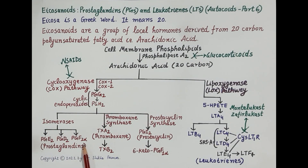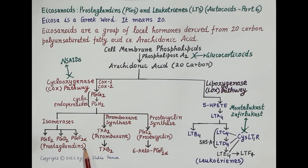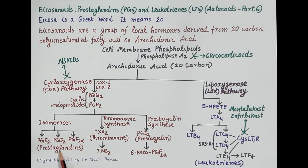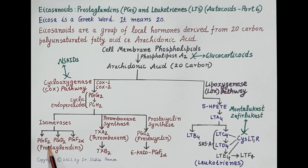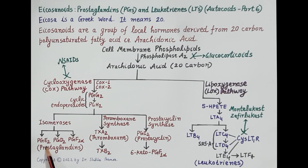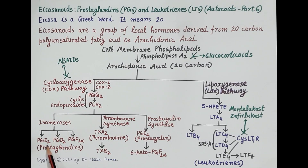PGE2 and PGF2α are the primary prostaglandins, primarily synthesized in the lungs and spleen. PGE2 is a mediator of pain and inflammatory response, is pyrogenic (produces fever), decreases gastric acid production, and increases mucus production — showing anti-ulcer properties.